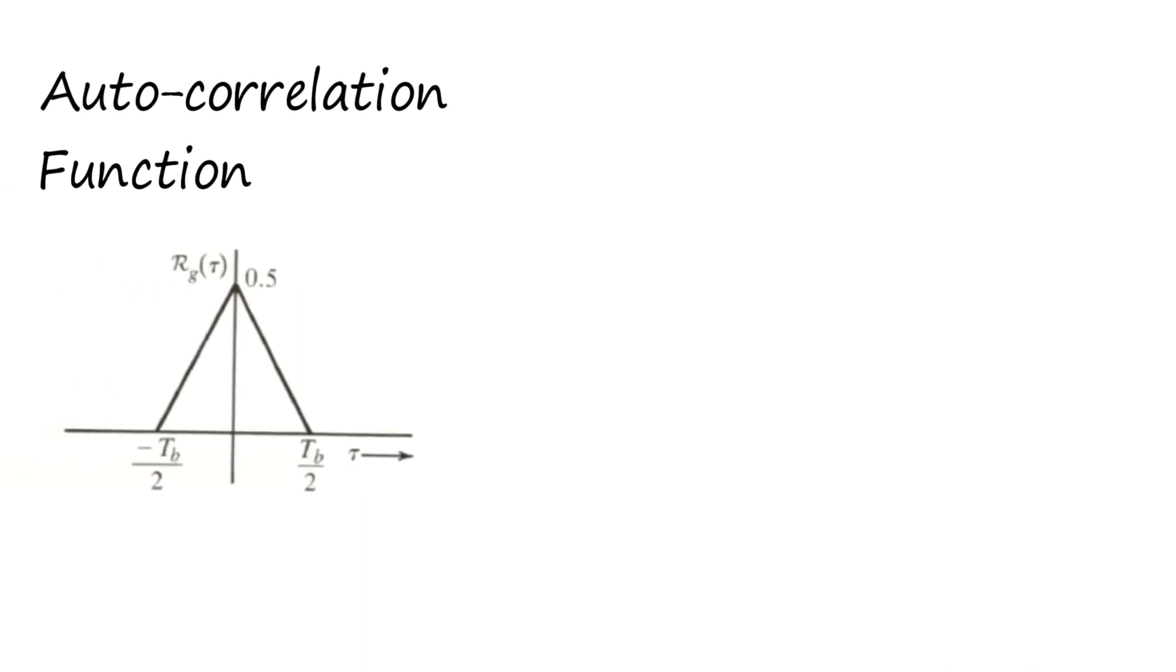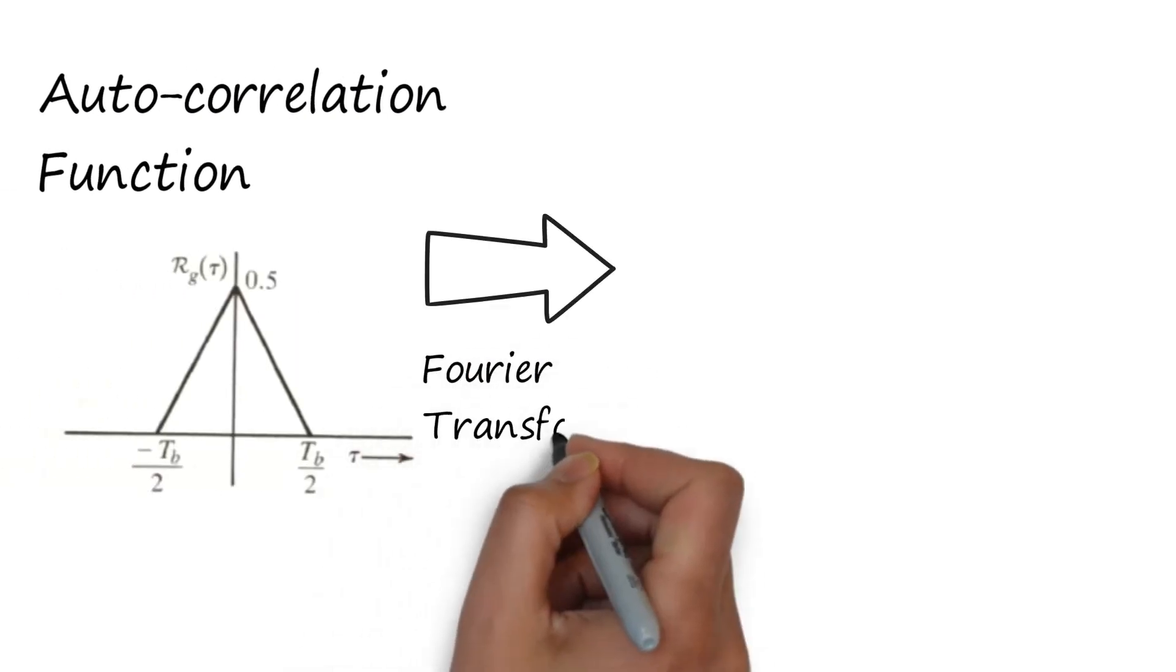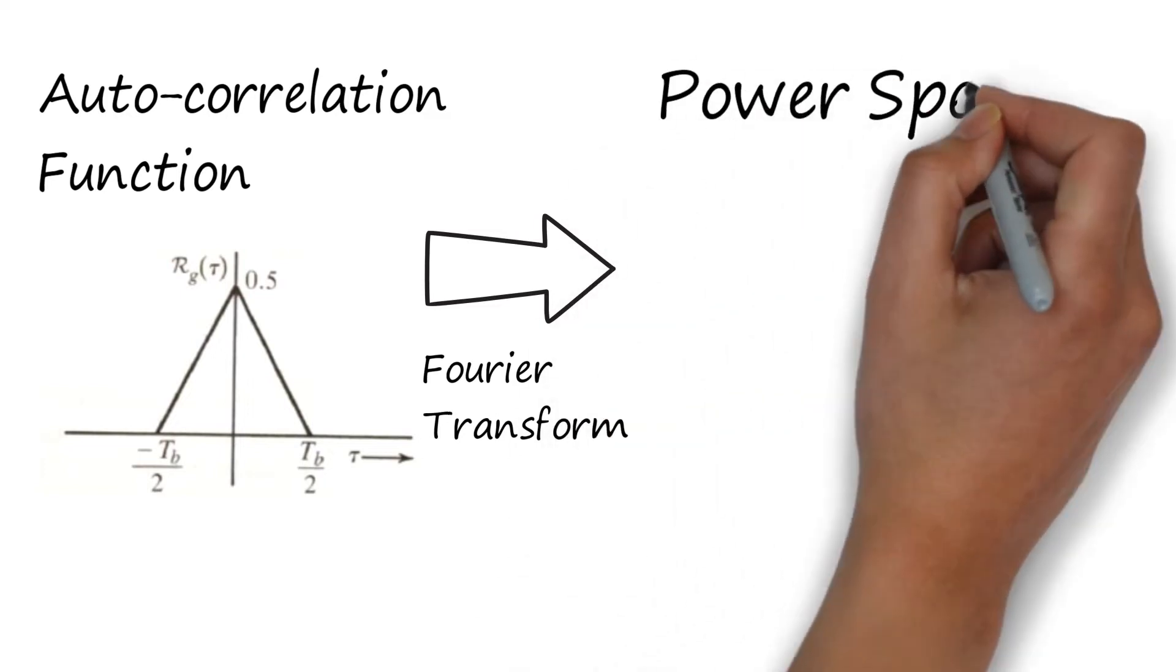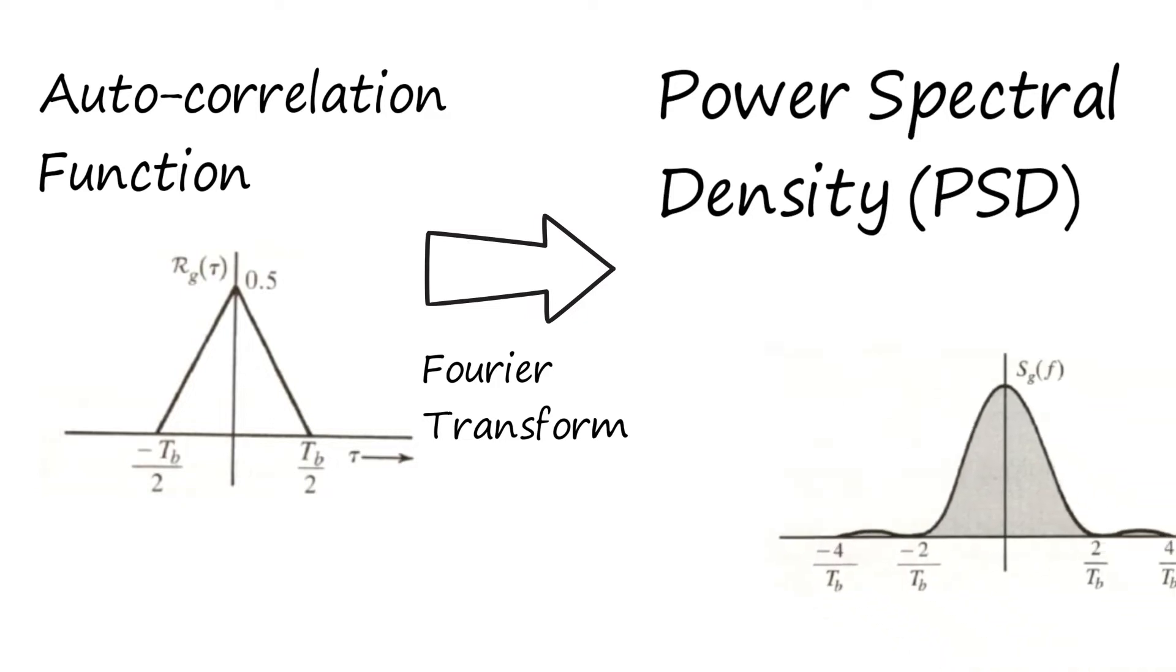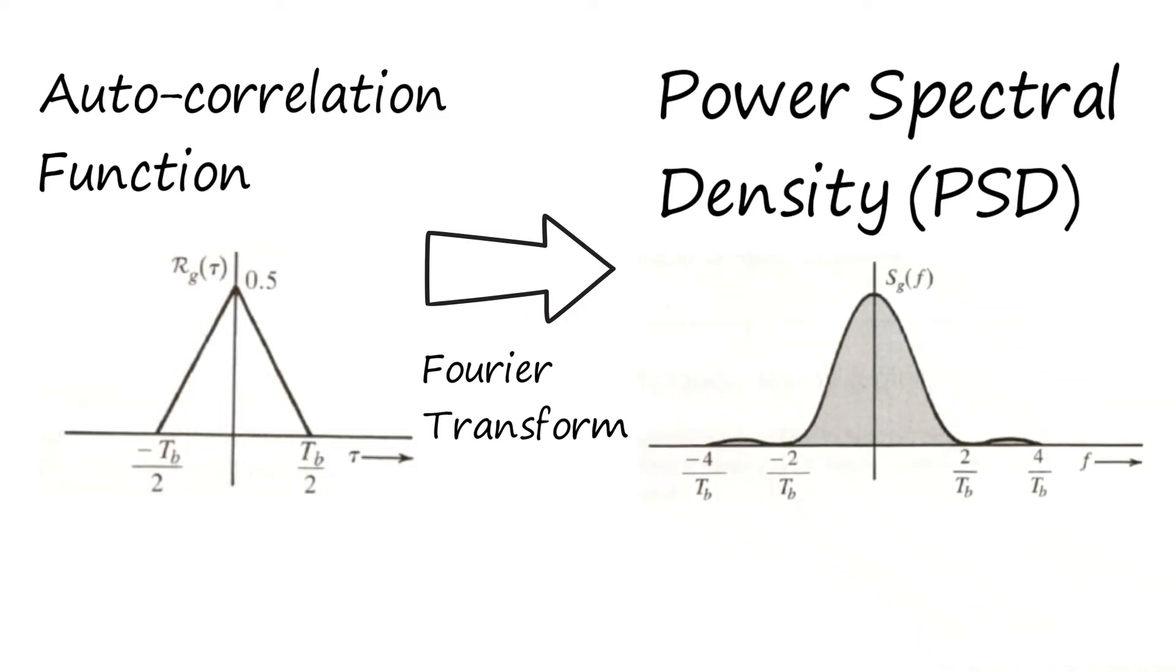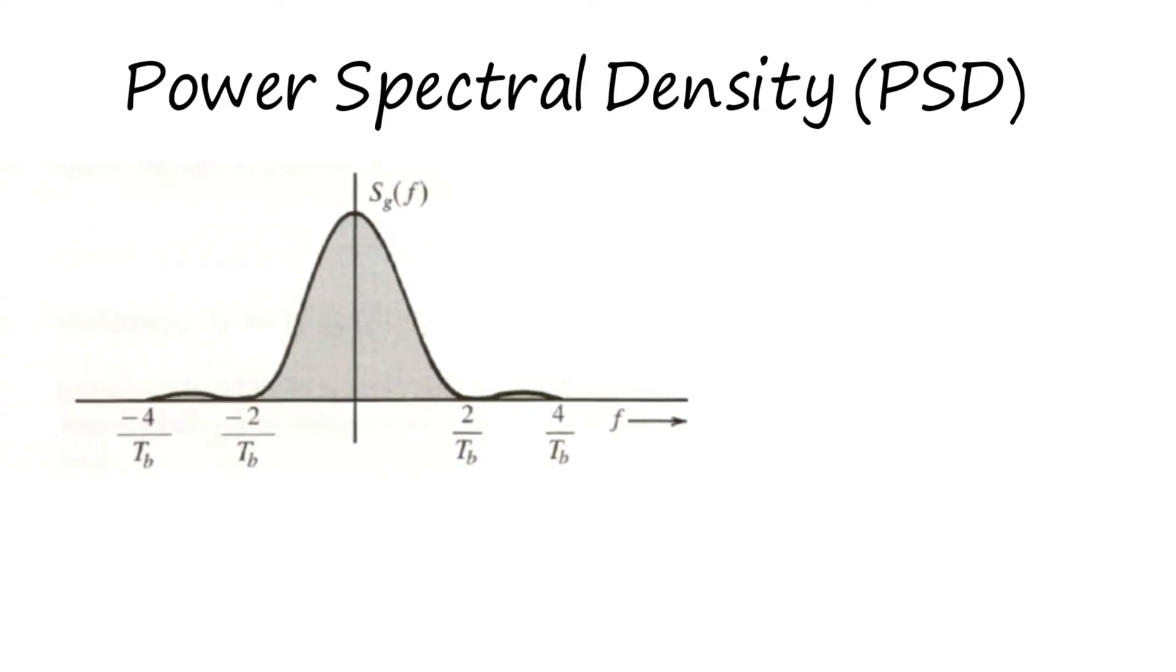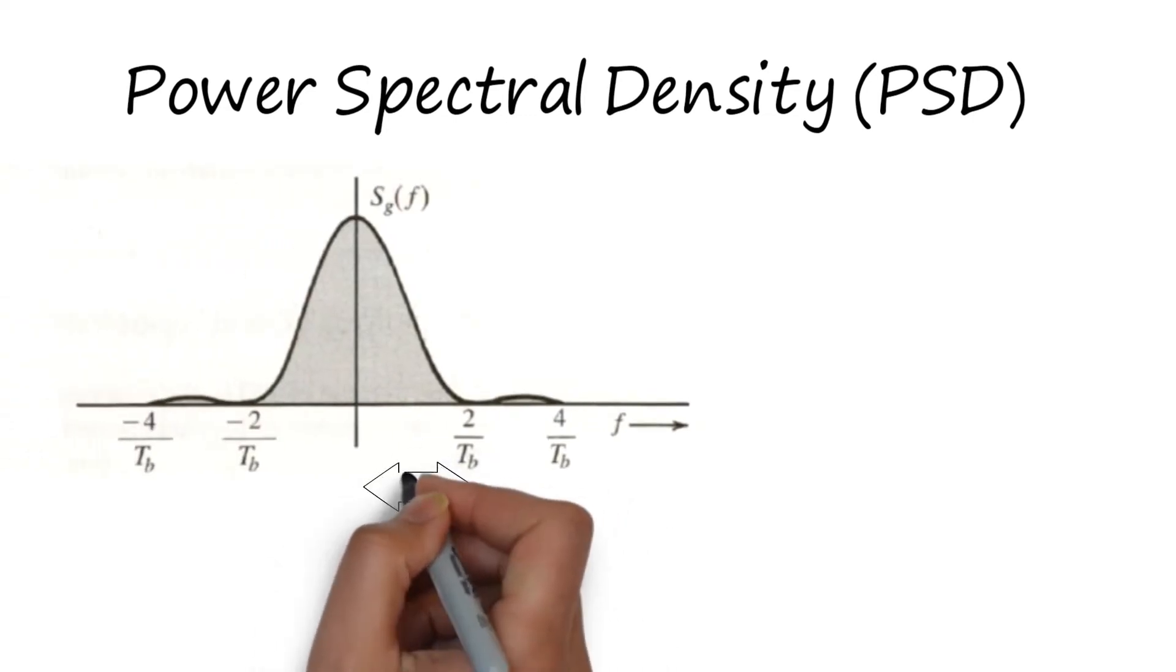Now we can take the Fourier transform of this autocorrelation function to obtain power spectral density, that is PSD. The Fourier transform of a triangular function is simply a sinc squared function, where sinc function is sin(x)/x. Hence in the frequency domain we can interpret the bandwidth using the PSD plot.